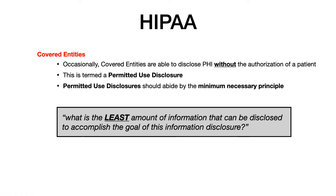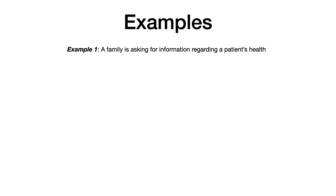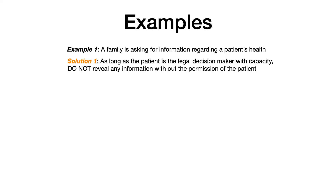Now that we've covered HIPAA, covered entities, and permitted use disclosures, let's go through some ethical examples that might come up on USMLE or COMLEX. Example one: a family is asking for information about a patient's health. The solution is that as long as the patient is the legal decision maker and has capacity, you do not reveal any information whatsoever without the permission or authorization of the patient. On an exam, if you can determine the patient has capacity and is the legal decision maker, you never give the family that information.